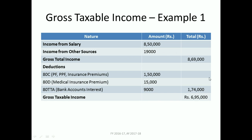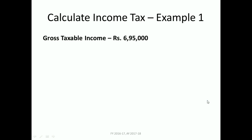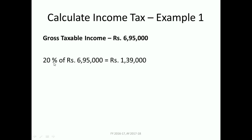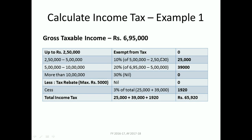So the gross taxable income is eight lakh sixty nine thousand minus one lakh seventy four thousand, which equals six lakh ninety five thousand. This falls under the twenty percent tax rate slab. However, you might think income tax is simply twenty percent of six lakh ninety five thousand — but that is not how income tax is calculated.